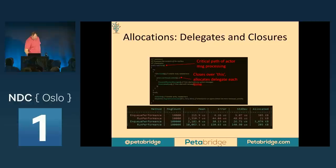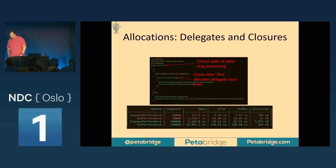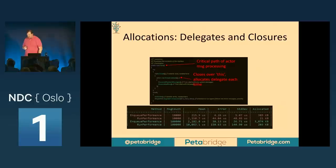I benchmarked this as a baseline. When processing 10,000 messages, we could do that in about 216 microseconds and allocate 385K worth of memory — that's just queuing up messages. When we schedule the actor to actually run and process those messages, it takes about 2.3 milliseconds and we consume 21 kilobytes worth of memory. The enqueue performance on the mailbox is a step that happens before this processing step.